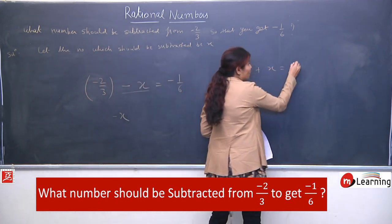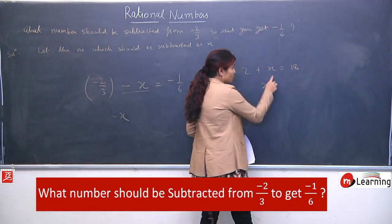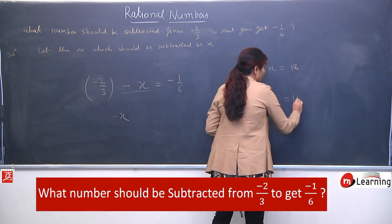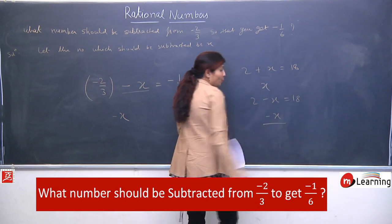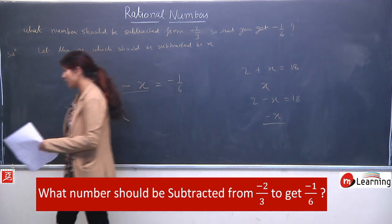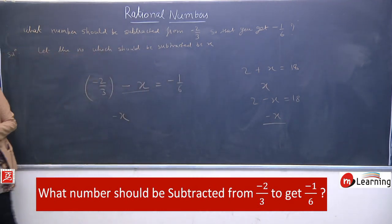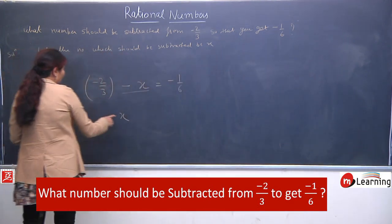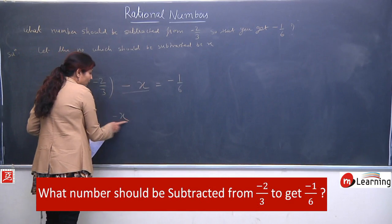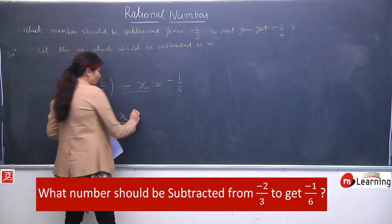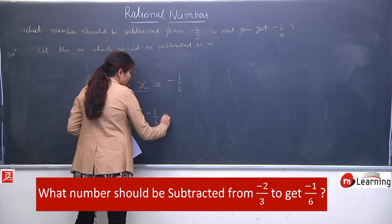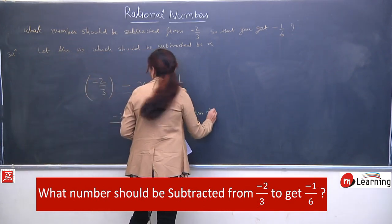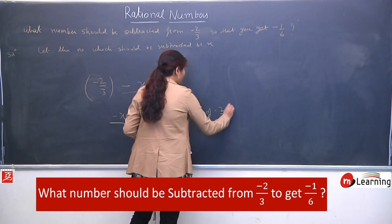Similarly, hum yahan variable ko left side mein rakhenge. But now in this case, variable is negative — to will keep as it is with sign also. Ek baar equation repeat kar deti hoon: hum ne x ko left hand side pe rakh liya tha. But now we have minus x, so we will keep it as it is. Sign ignore nahi karna hai, bhool jayenge toh question poora galat ho jayega.